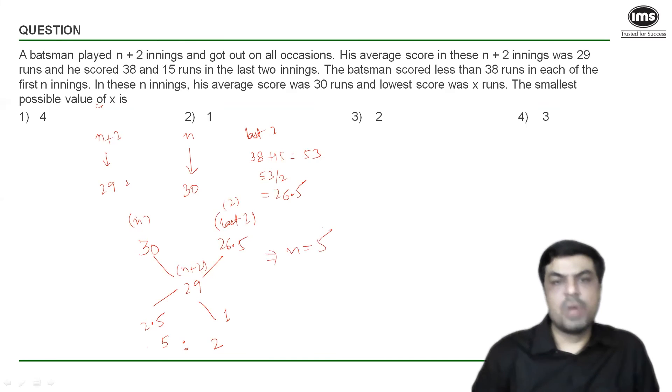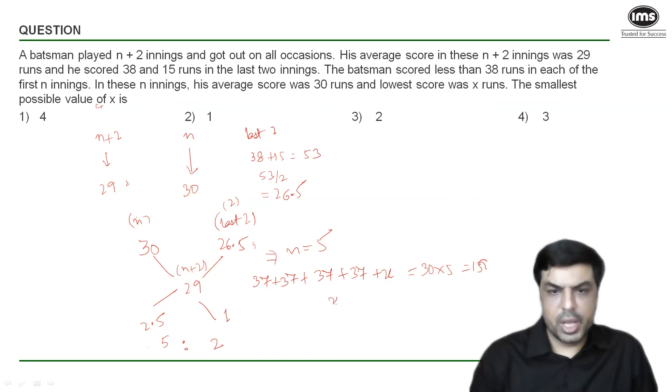And from here on the solution will be similar to what we did in the last method. So if I want to minimize the score in one of the five innings I will presume that he scored maximum possible which is 37 in each of the remaining four innings and minimum possible x in the fifth innings and his total is nothing but at an average of 30, 30 into 5, 150. So from here I get x which is the minimum possible value is 150 minus 148 which is two runs which is my answer.